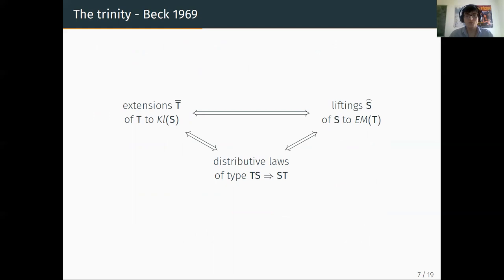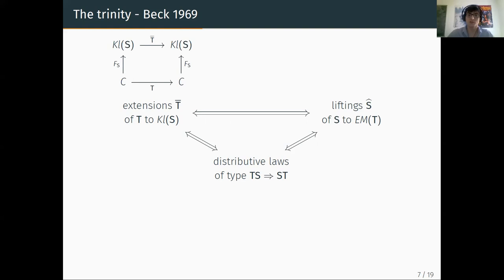This is right from the theory of John Beck. There is a one-to-one correspondence between three things: distributive laws, extensions, and liftings. An extension is taking monad T to the Kleisli category of S, where T-overline is a monad in the Kleisli category and certain diagrams commute — one for the functor, one for the unit, one for the multiplication. Dually, a lifting of S to the Eilenberg-Moore category of T is a monad lying in the Eilenberg-Moore category making those diagrams commute.